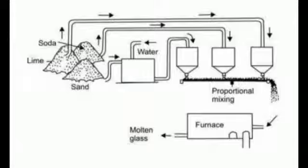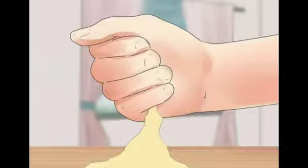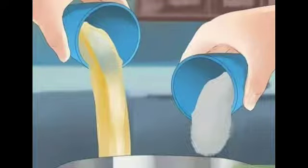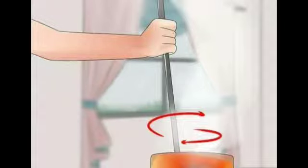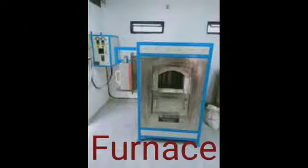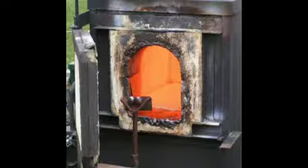The mixture is heated in a furnace till it turns into hot liquid glass. A furnace is a heater in which clean white sand along with chemicals like soda and lime are heated to make the hot liquid glass.